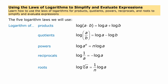The five logarithm laws we're going to use include the main three for products, quotients, and powers. The logarithm of a product is the same as the sum of the logarithms. The logarithm of a quotient is the same as the difference of the logarithms. And the logarithm of a power is equivalent to the exponent times the logarithm of the base.